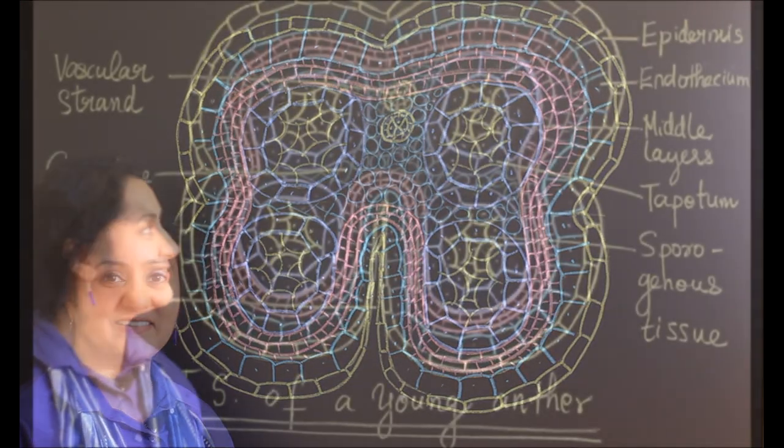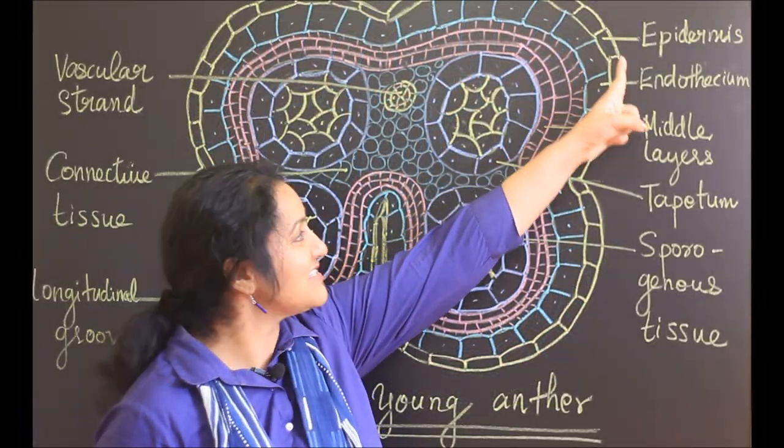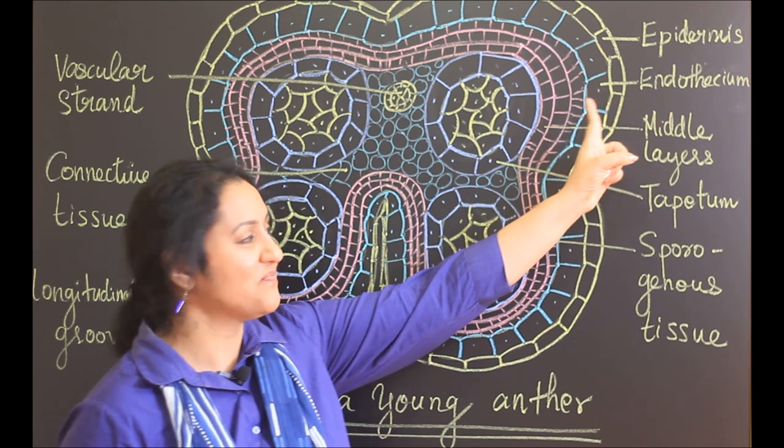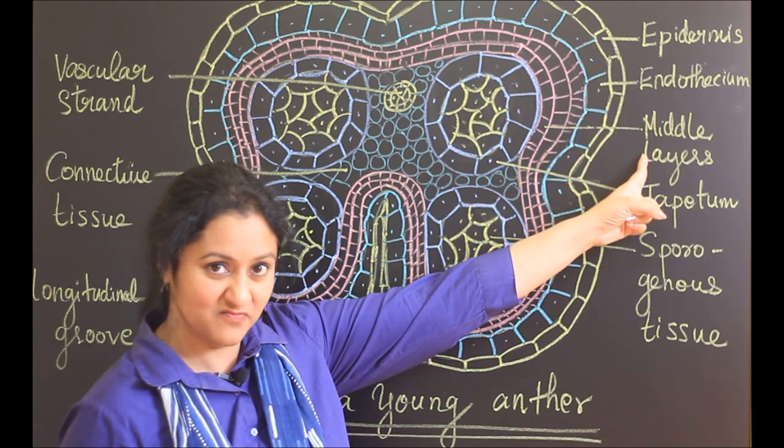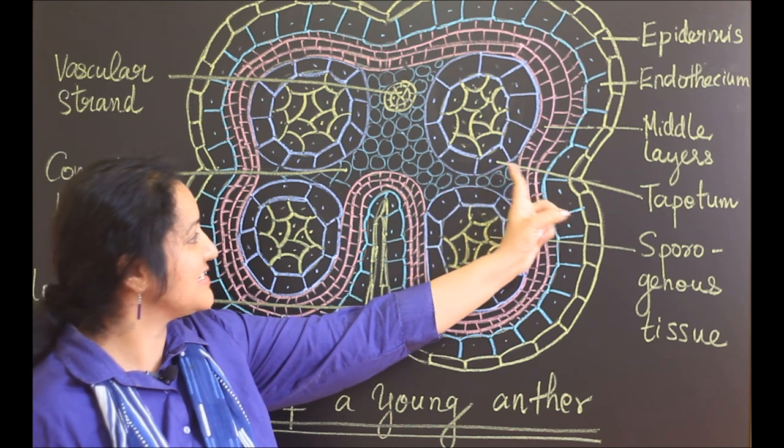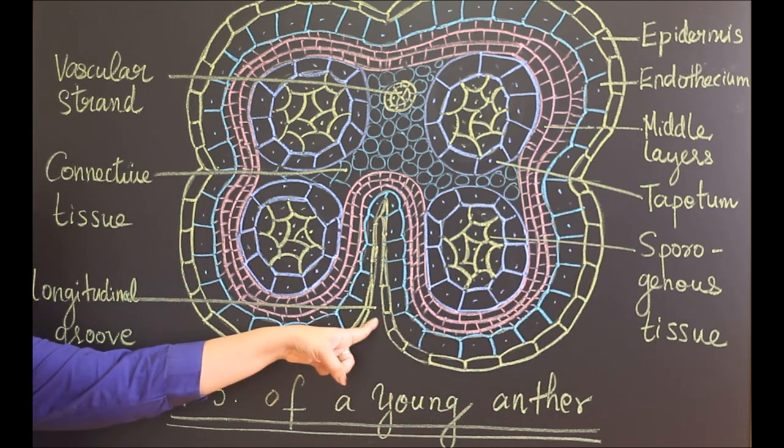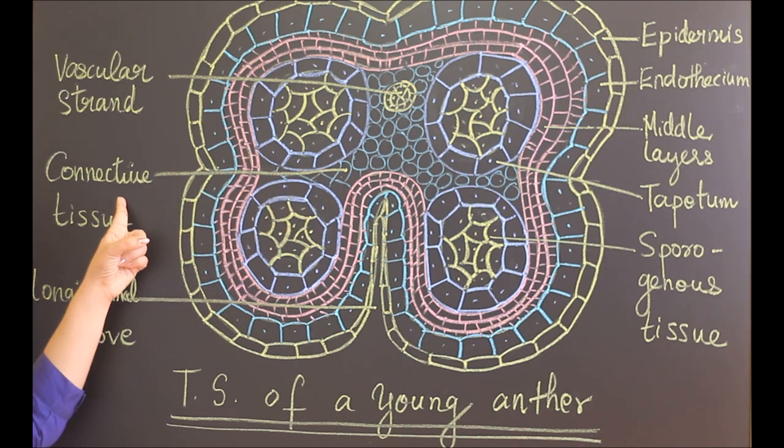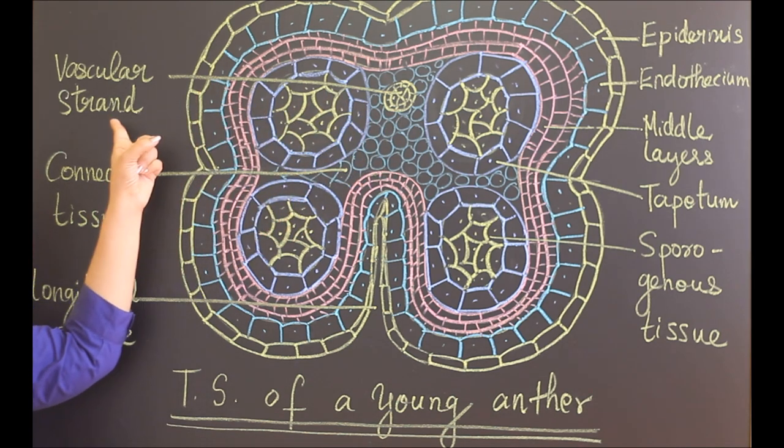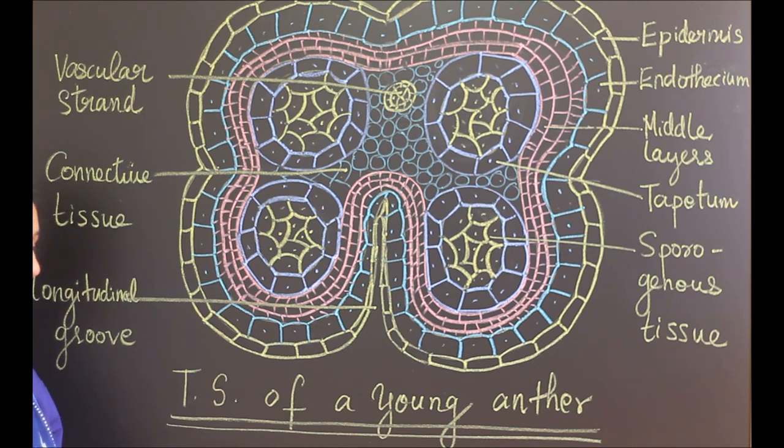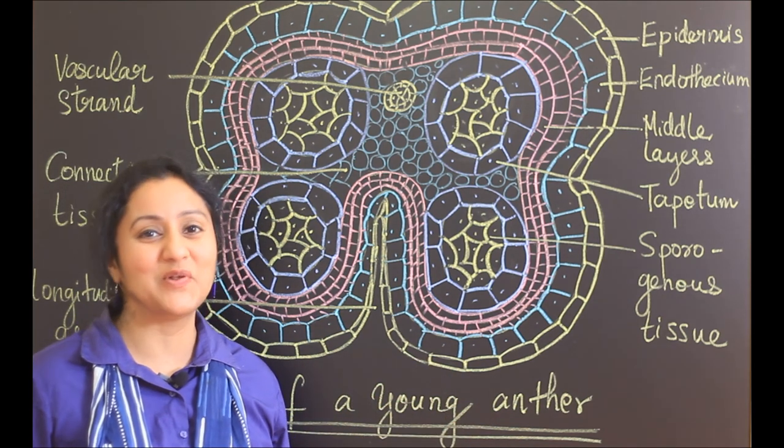Now let's start labeling. Epidermis, endothecium, middle layers, three layers of middle layers, tapetum, sporogenous tissue. This is a longitudinal groove, connective tissue, vascular strand, TS of a young anther. The diagram is done. Hope you liked it.